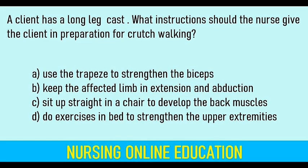A client has a long leg cast. What instruction should the nurse give the client in preparation for crutch walking? Options — Use the trapeze to strengthen the biceps; Keep the affected limb in extension and abduction; Sit up straight in a chair to develop the back muscles; Do exercises in bed to strengthen the upper extremities. Answer: Do exercises in bed to strengthen the upper extremities.